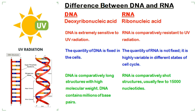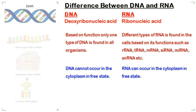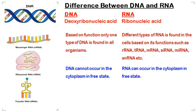DNA is comparatively long with high molecular weight and contains millions of base pairs, while RNA is comparatively short, usually ranging from a few to 15,000 nucleotides. Based on functions, only one type of DNA is found in all organisms, while different types of RNA are found in cells based on their functions.